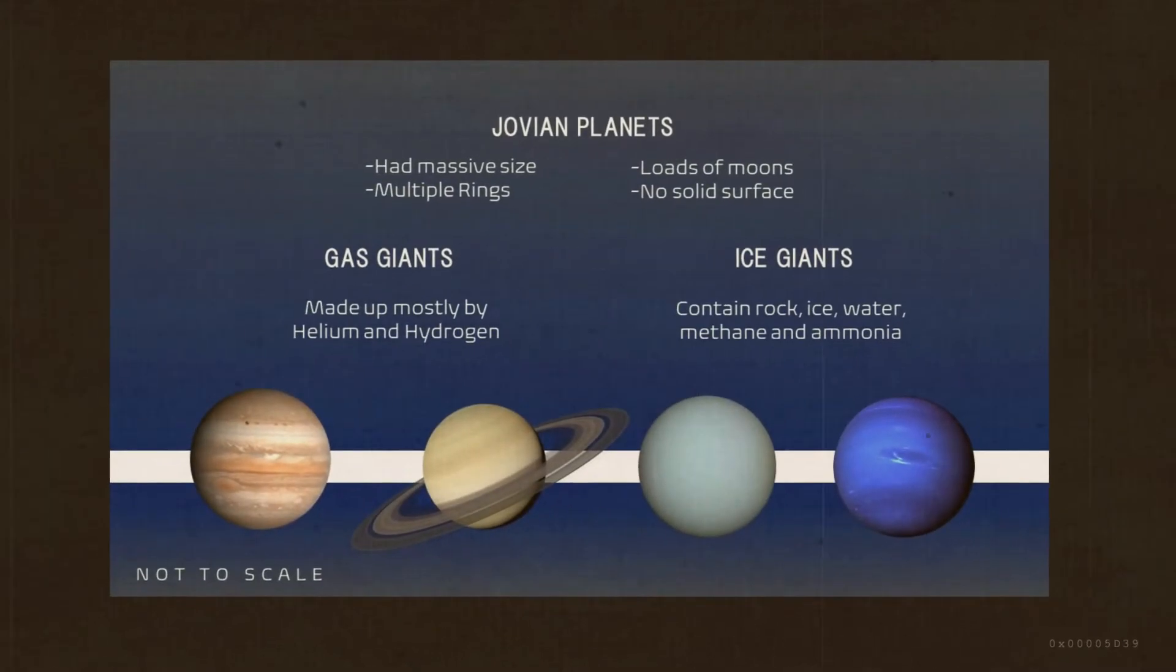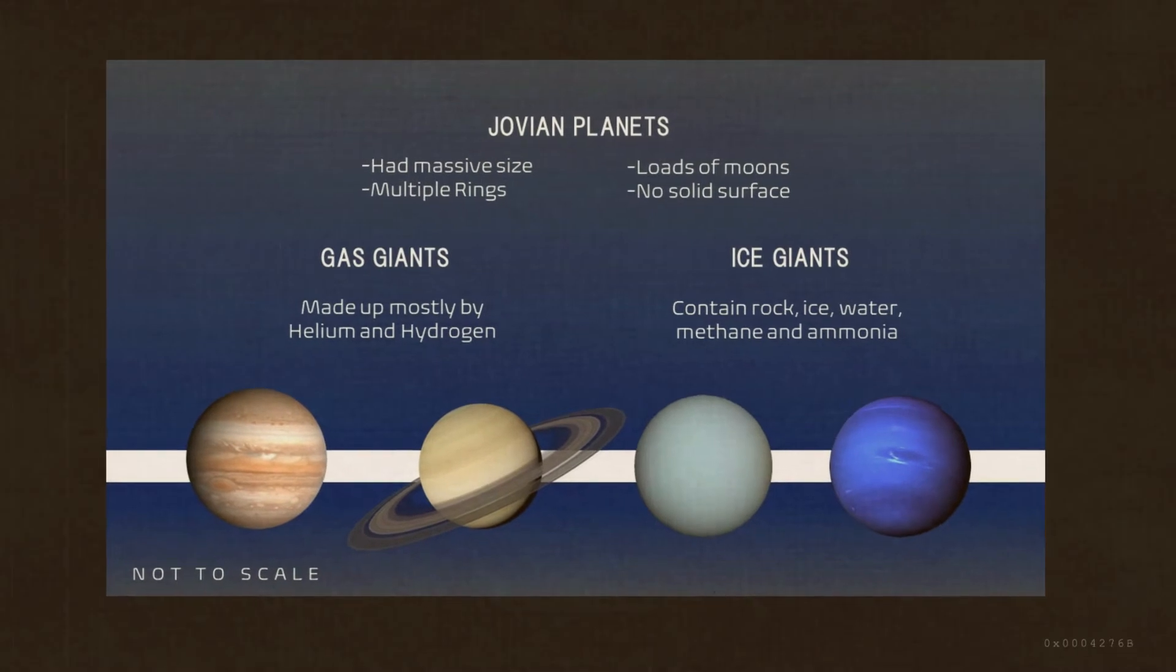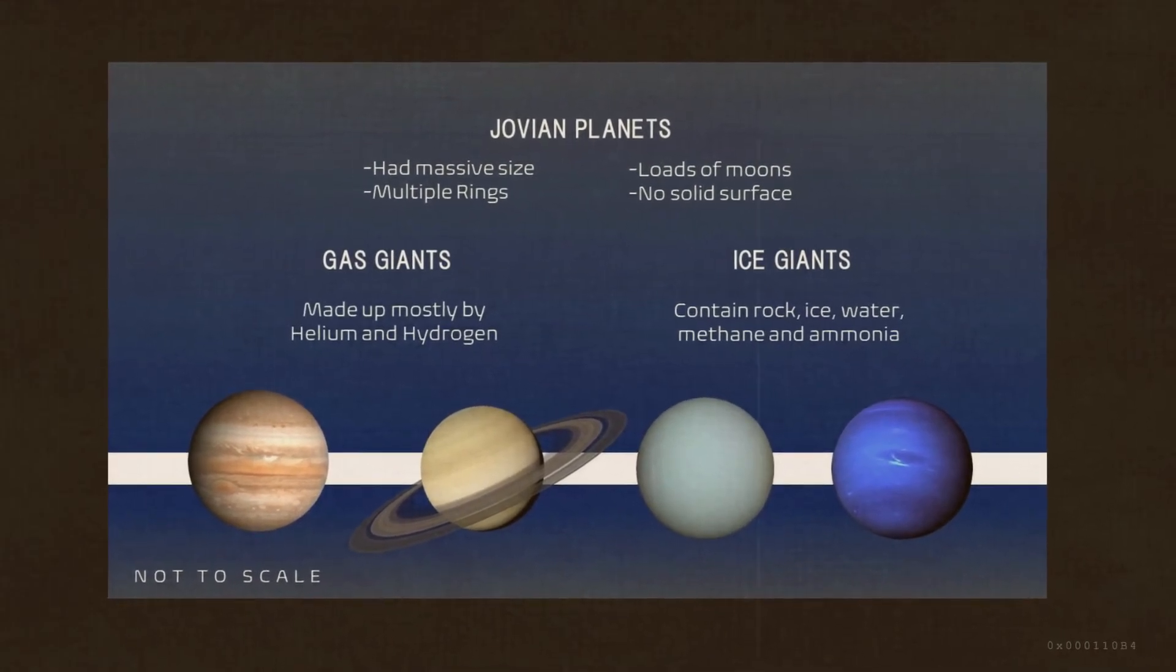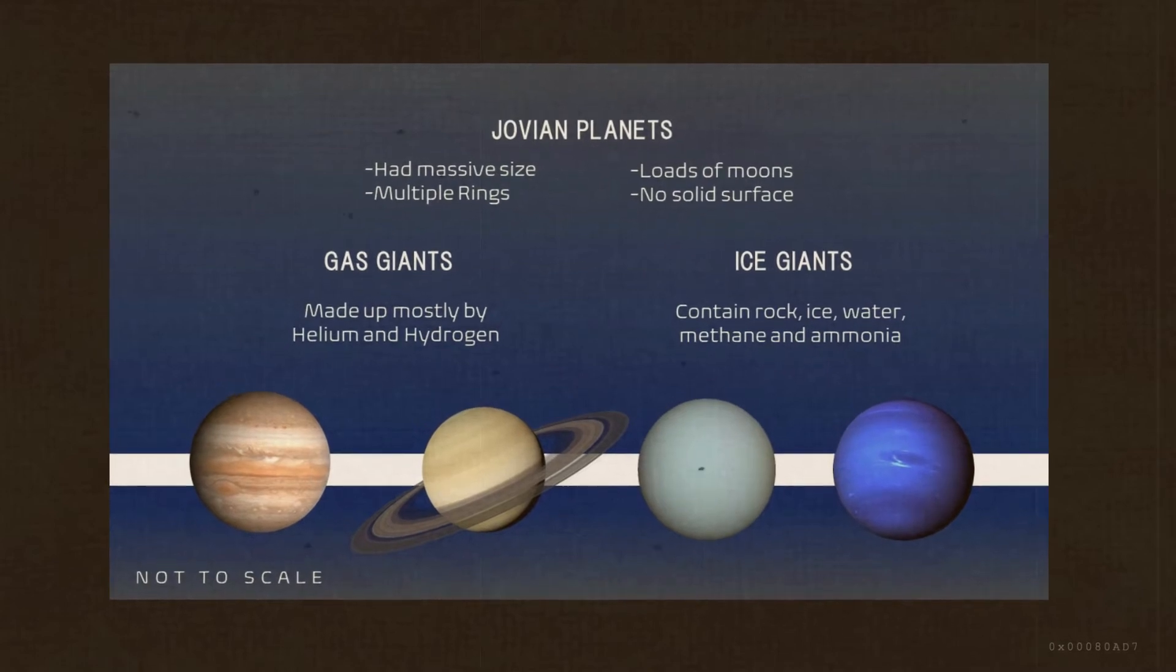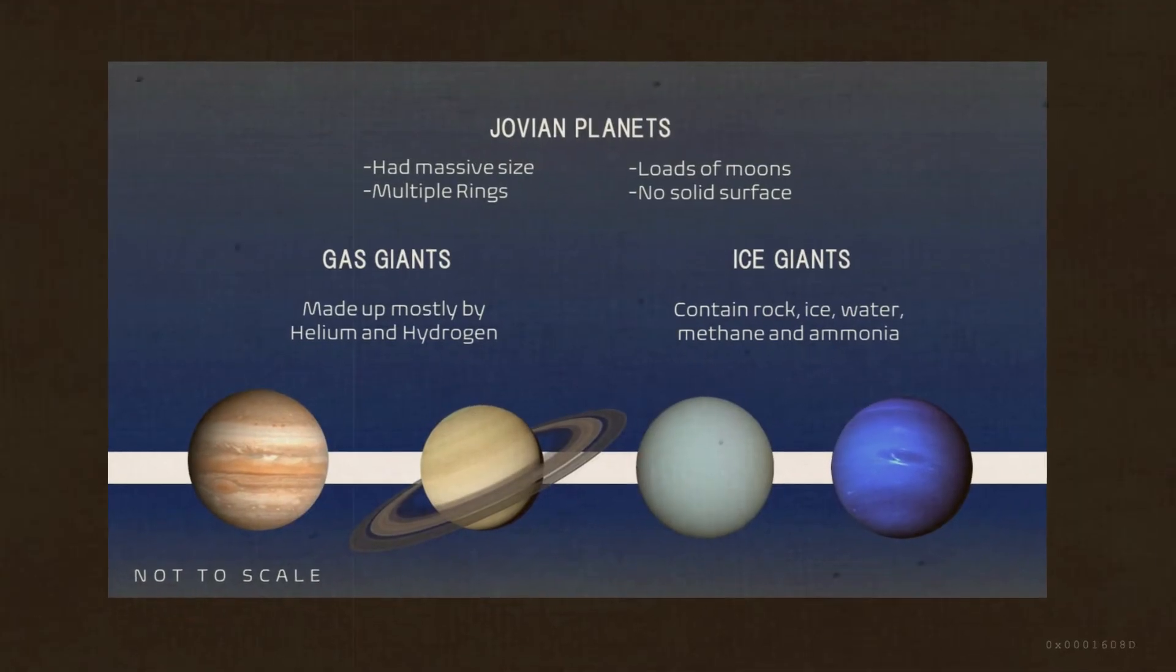The Jovian planets are divided into two classifications. The gas giants, Jupiter and Saturn, which are made up mostly of helium and hydrogen. The ice giants, however, Neptune and Uranus, contain rock, ice, water, methane, and ammonia.